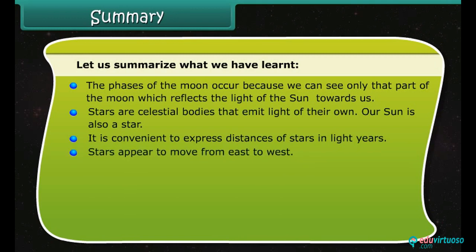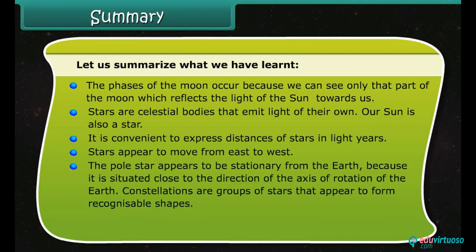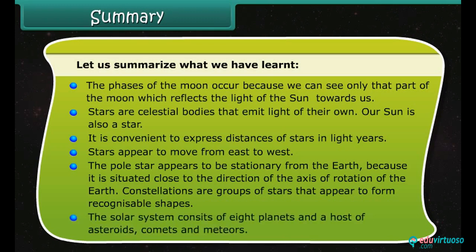Stars appear to move from east to west. The pole star appears to be stationary from the earth because it is situated close to the direction of the axis of rotation of the earth. Constellations are groups of stars that appear to form recognizable shapes. The solar system consists of eight planets and a host of asteroids, comets and meteors.